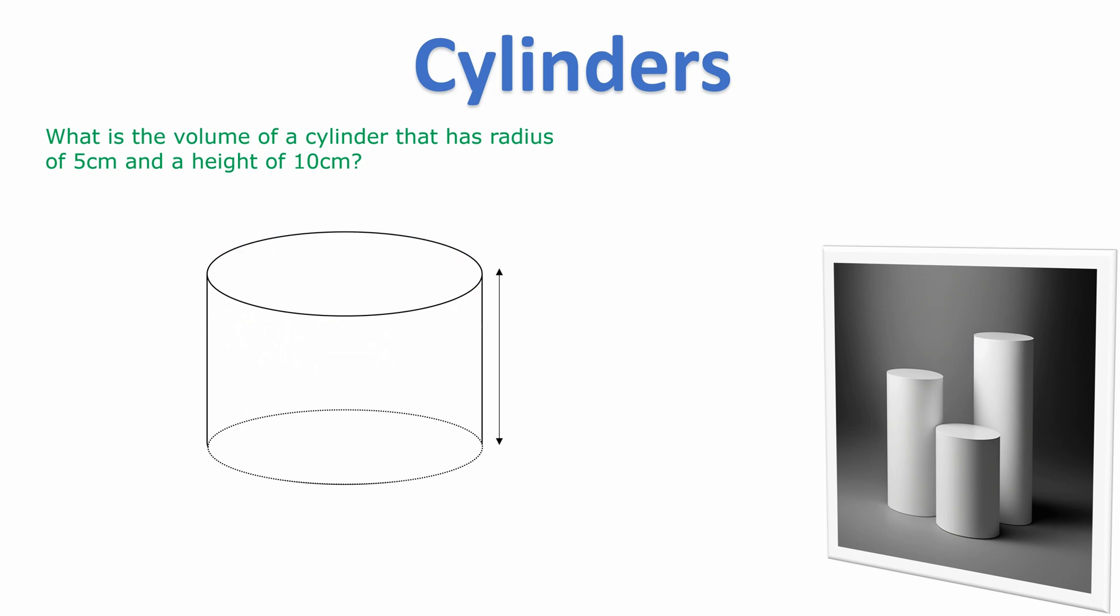Essentially the way we get the volume of a cylinder is by having a circle run through the entire cylinder. Let me replay that. So imagine the circle starting at the base of the cylinder and running its way through and up to the top of the cylinder.